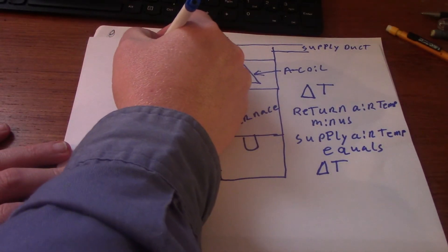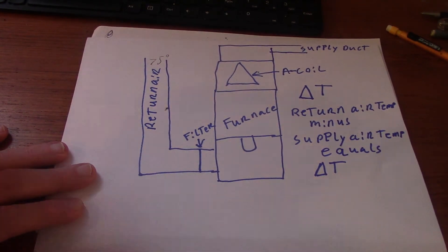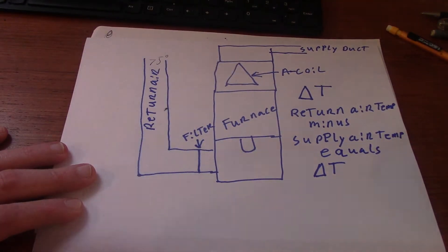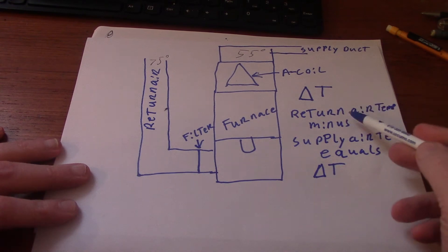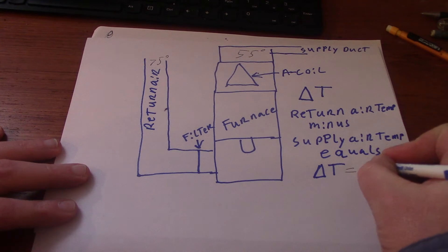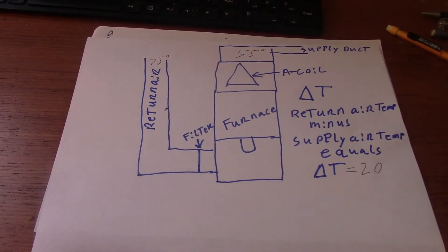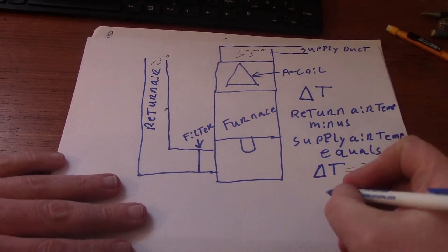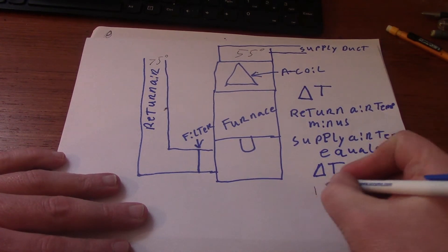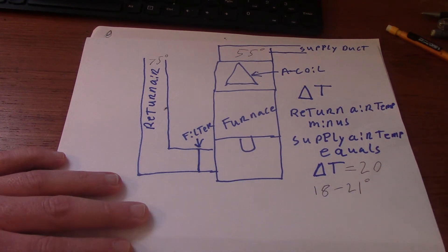Return air temperature will say 75 degrees. Your supply air temperature, in ideal situations, would be 55 degrees. So 75 minus 55 will equal Delta T. Our Delta T is right now 20. 20 is a nice perfect number. It's what I was always taught in school because it's easy to remember. There is a range that you can have, 18 to 21 degrees for your Delta T.